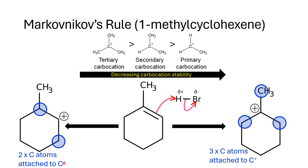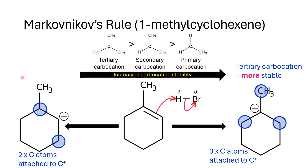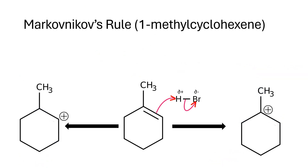Looking at carbocation stability, the tertiary carbocation is the most stable — it has three alkyl groups with carbon atoms attached directly to C+. The secondary has two carbon atoms attached to C+ and is slightly less stable. The least stable is the primary carbocation with only one carbon attached to C+. So on the far right-hand side, the tertiary carbocation is obviously more stable.